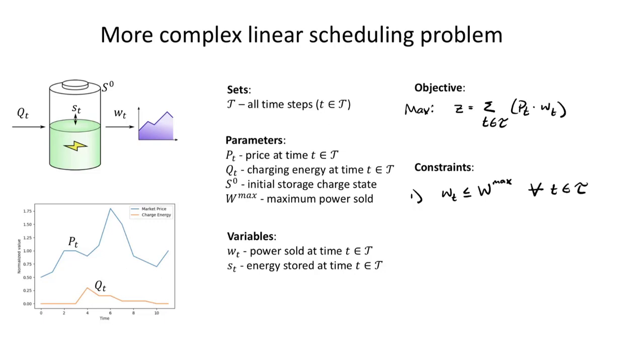So this constraint is actually repeated. The same constraint is repeated for every single value that T will take, that little T will take. Okay, so that will ensure that at any moment in time we're not producing more power than the system can allow.